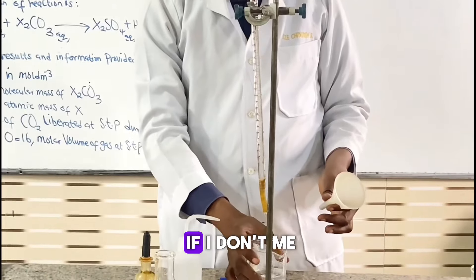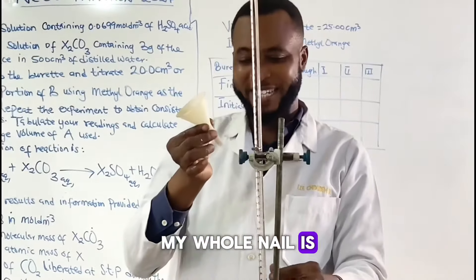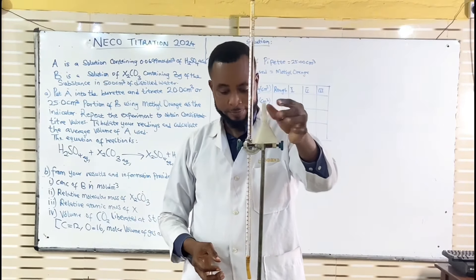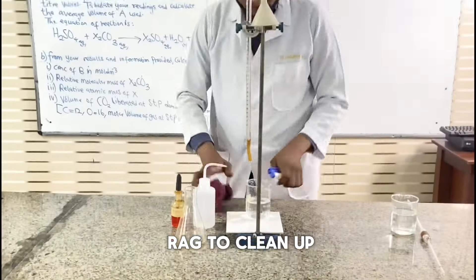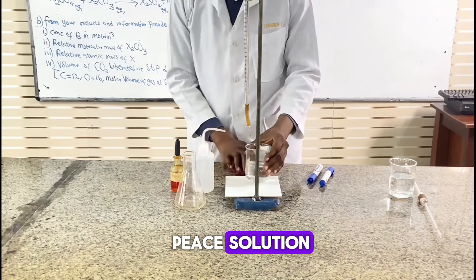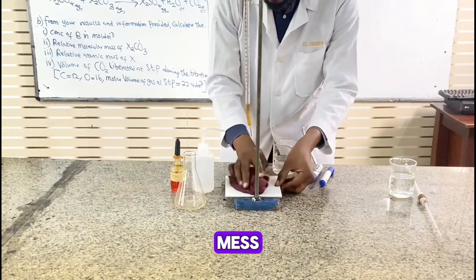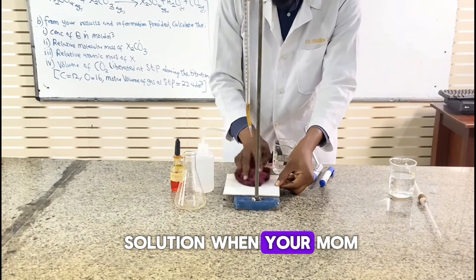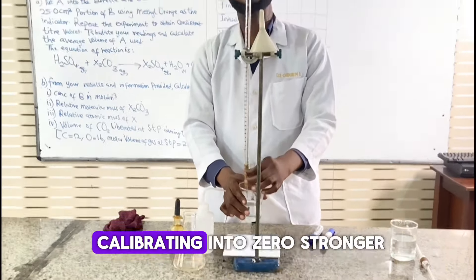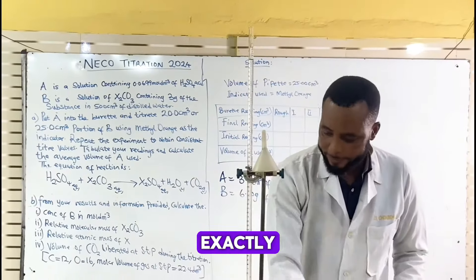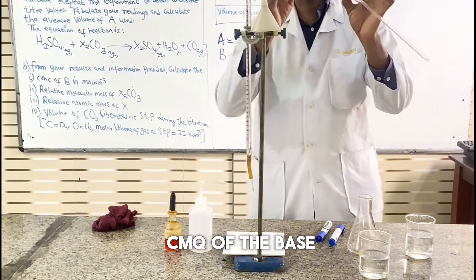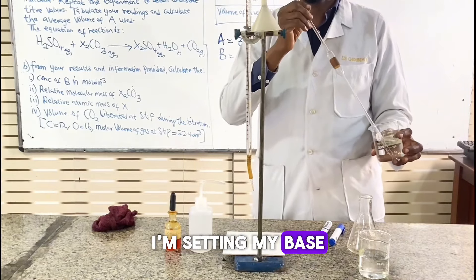I have a burette here. My funnel is bigger than the opening of my burette. Nevertheless, I have a rag with it. It will clean up any spill — that's why it's necessary to take away the excess solution, so that you don't have this kind of mess. Don't mess up the solution. I'm calibrating it to zero. Now I'm using 25 cm³ of the base, putting the base into the conical flask.